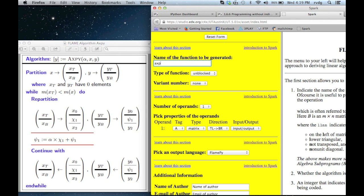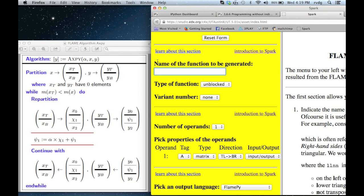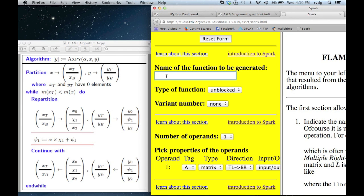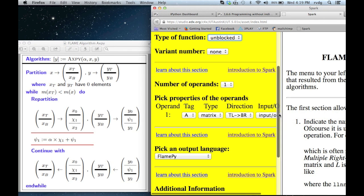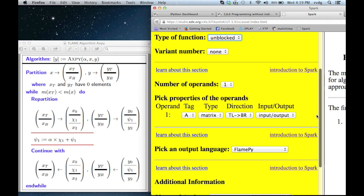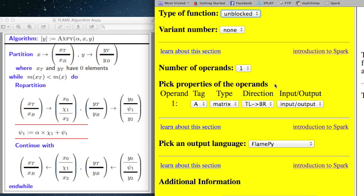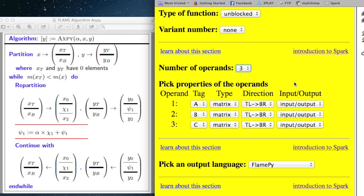First thing we need to do is, let's make this a little larger. First thing we need to do is name this routine, so we'll call it Axby. Let's just leave this alone and make it an unblocked algorithm. We're not going to give it a variant number. Then we need to decide how many operands there are. There's alpha, x, and y, so I'll choose three operands.